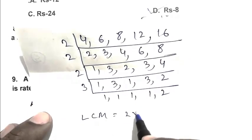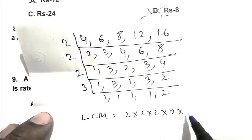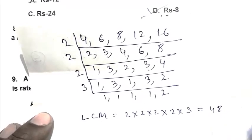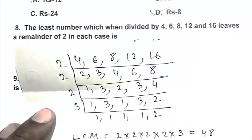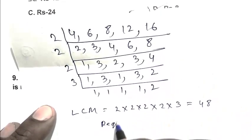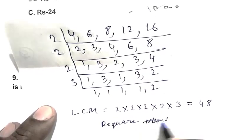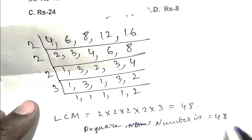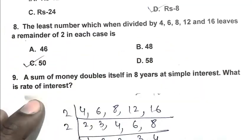So the LCM is 2, 2, 2, 2, 2, 3, that is 48. So the required number is 48 plus 2, that is 50. So C is the right answer.